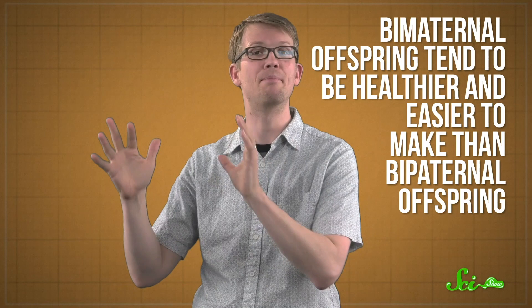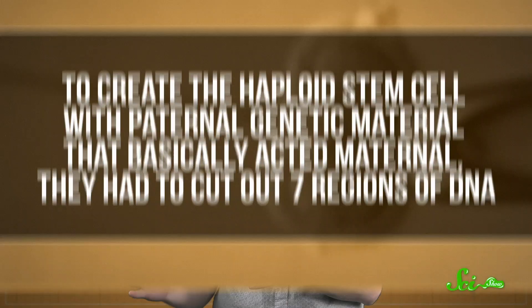So this test wasn't anywhere near perfect, but it's still better than ever before. Now, in past experiments, these bimaternal offspring tend to be healthier and easier to make than bipaternal offspring. This makes sense with our current understanding of genetics, because there are some reptiles, amphibians, and fish that can reproduce asexually with only females. So when these researchers tried to create bipaternal mice, it took a few extra steps and had more challenges.